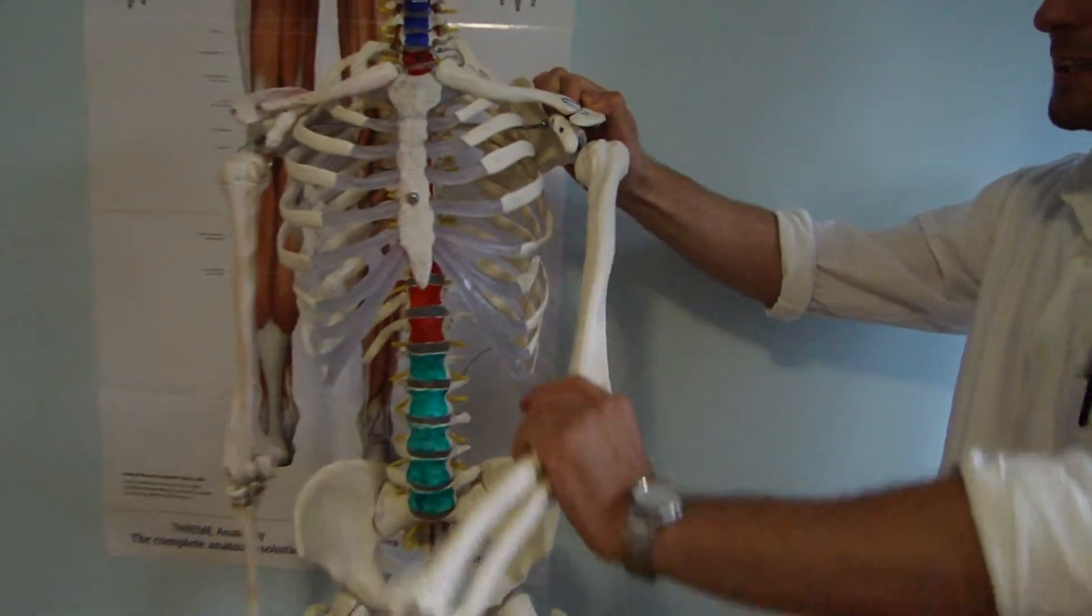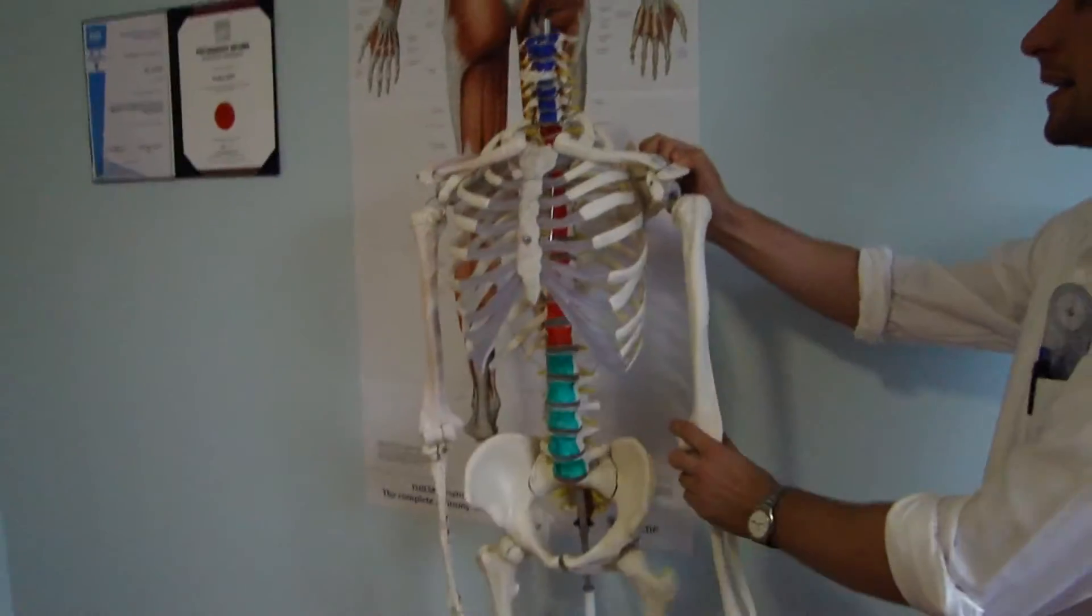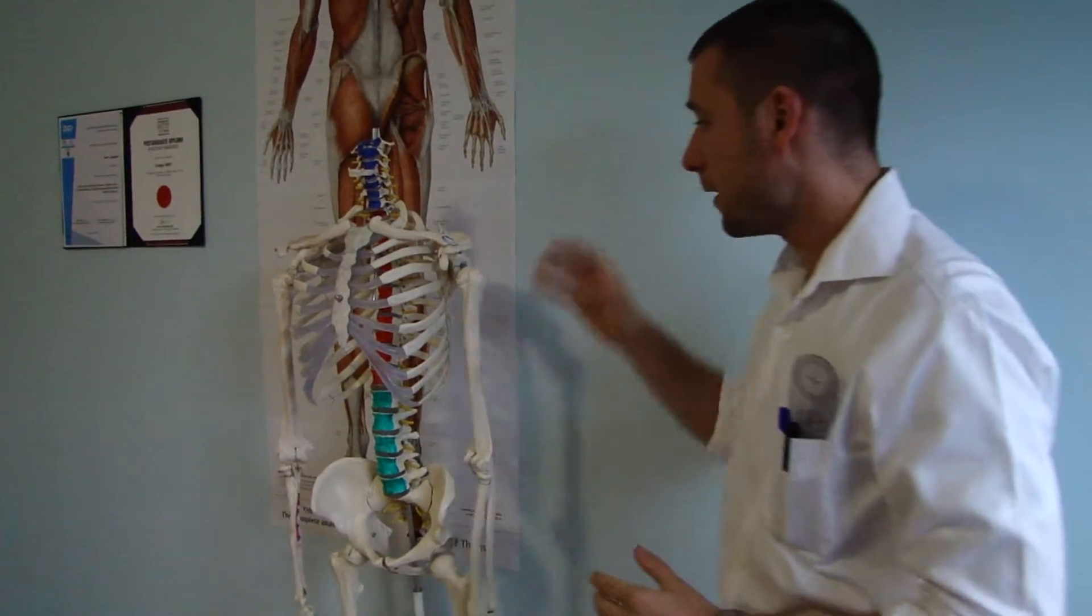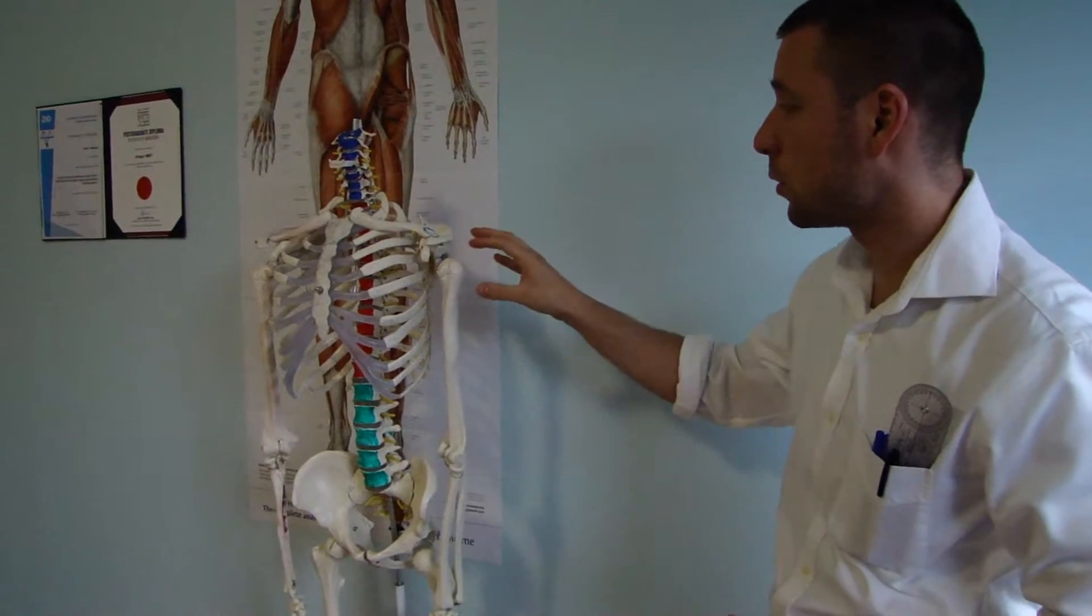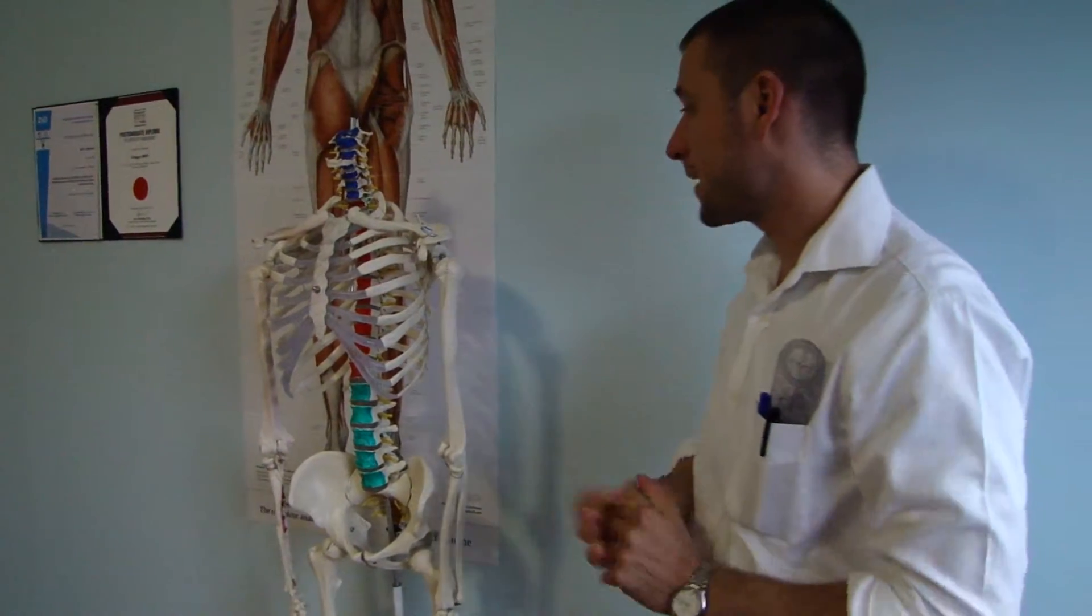First move is this. This is horizontal flexion in GHJ joint. Two main muscles here: deltoid pars clavicularis and coracobrachialis muscle.